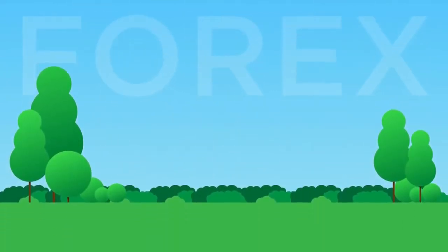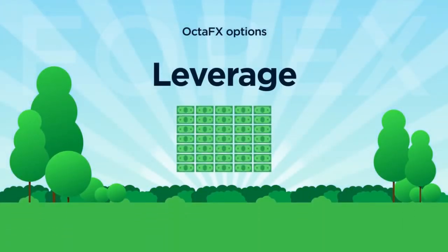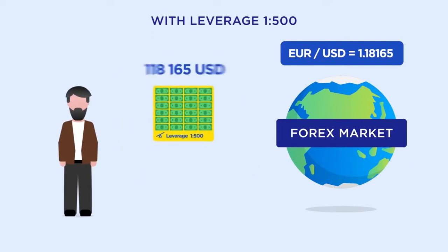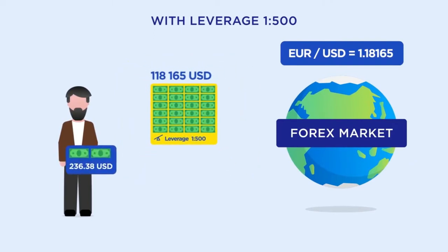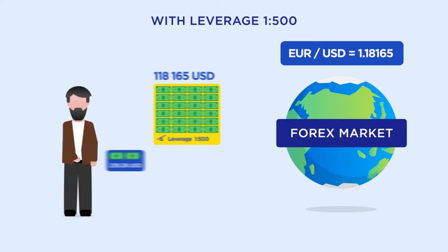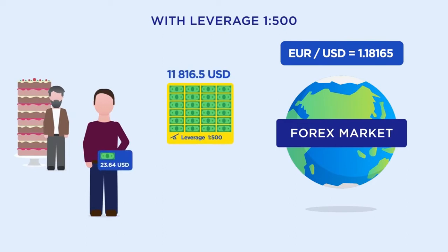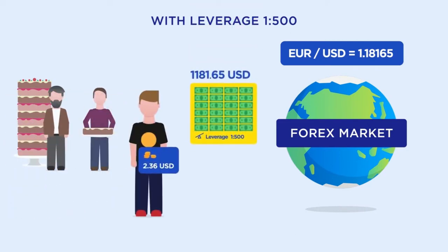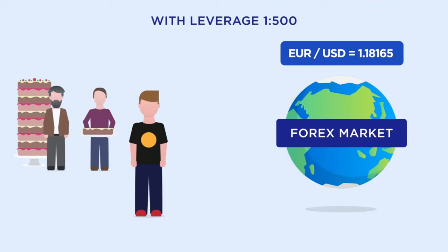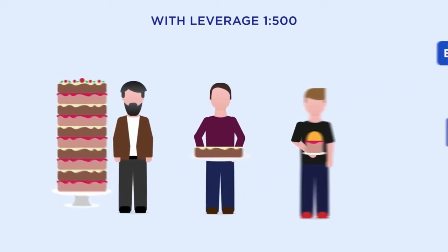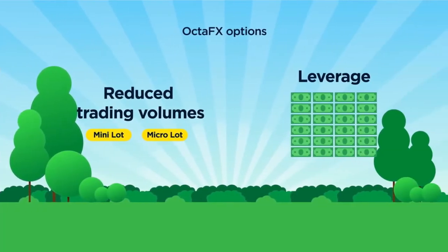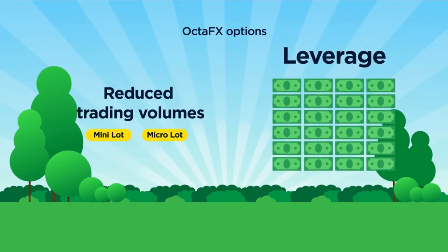The second option is leverage. Leverage is a special loan which is given to a trader at the moment of opening an order. With the help of leverage of 1 to 500, you can trade one lot of EURUSD by only investing 236.38 US dollars of your own money. To trade a mini lot, you only need 23.64 US dollars, and 2.36 US dollars for a micro lot. The leverage of 1 to 500 allows you to open orders which are 500 times bigger than your own investment. That is how OctaFX allows you to build an effective strategy without taking excessive risks.